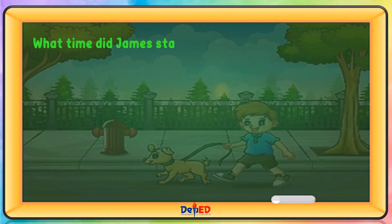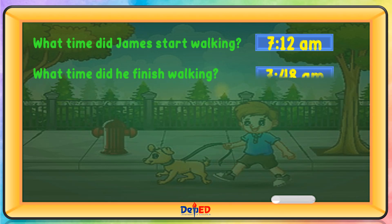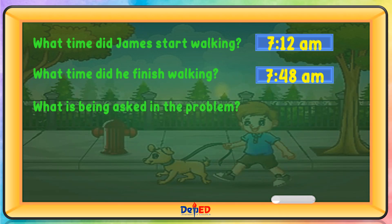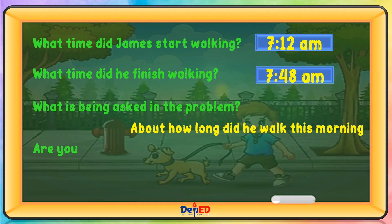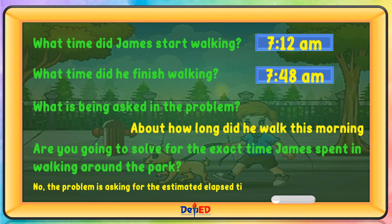What time did James start walking? 7:12 a.m. What time did he finish walking? 7:48 a.m. What is being asked in the problem? About how long did he walk this morning? Are you going to solve for the exact time James spent walking around the park? No. The problem is asking for the estimated elapsed time spent by James in walking.